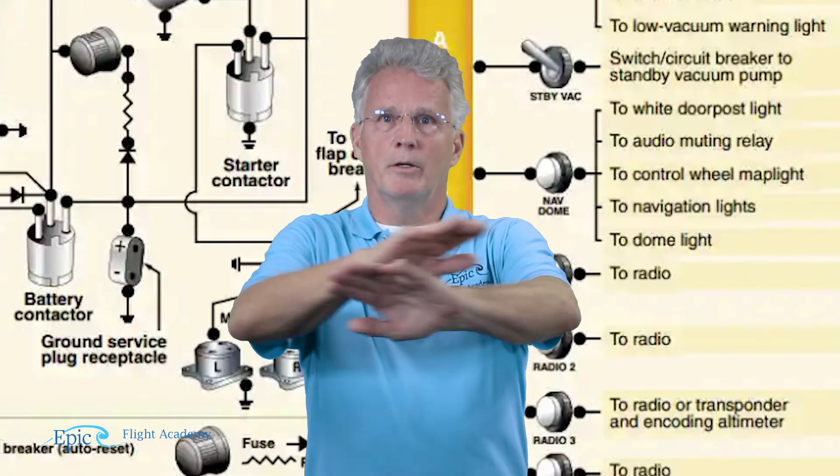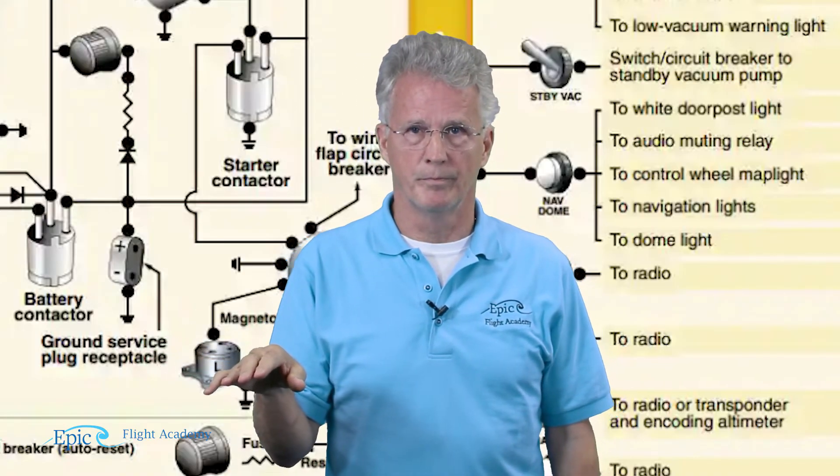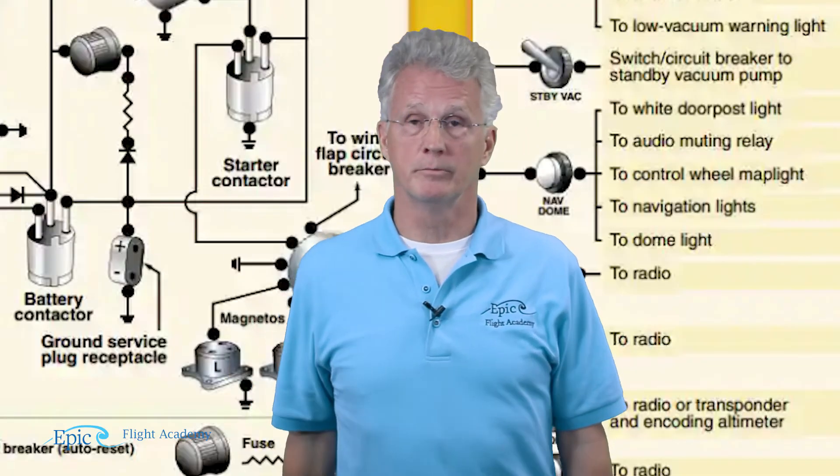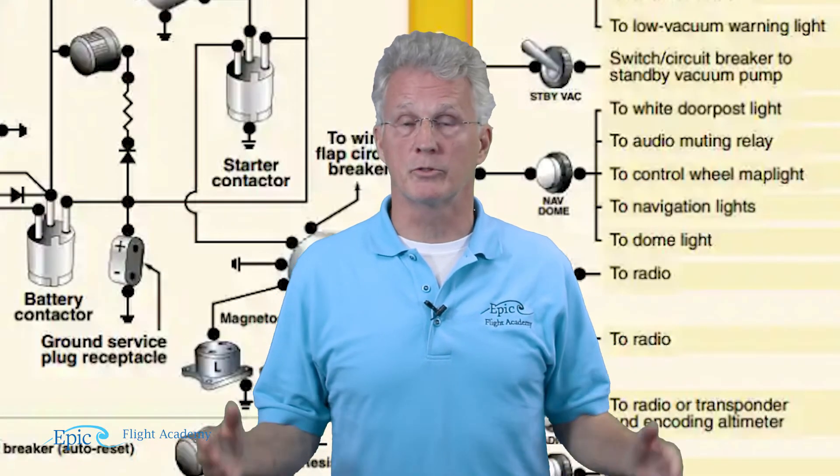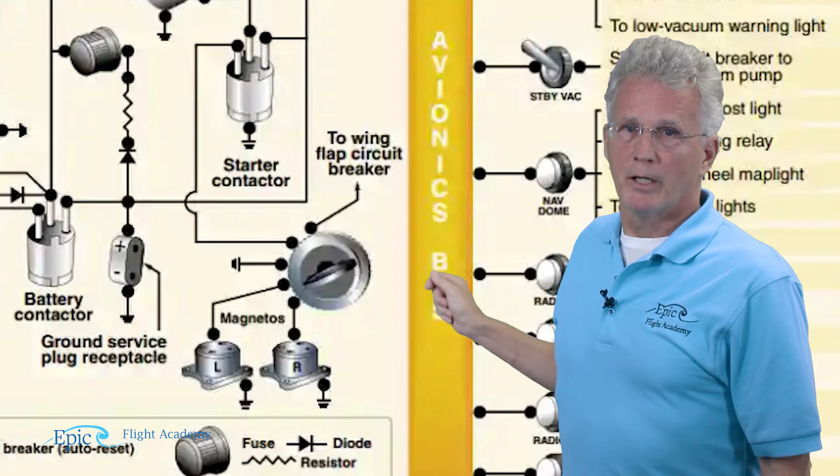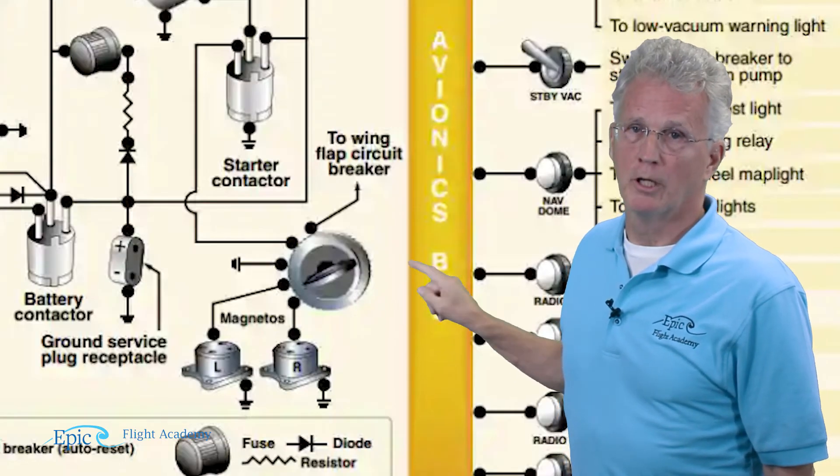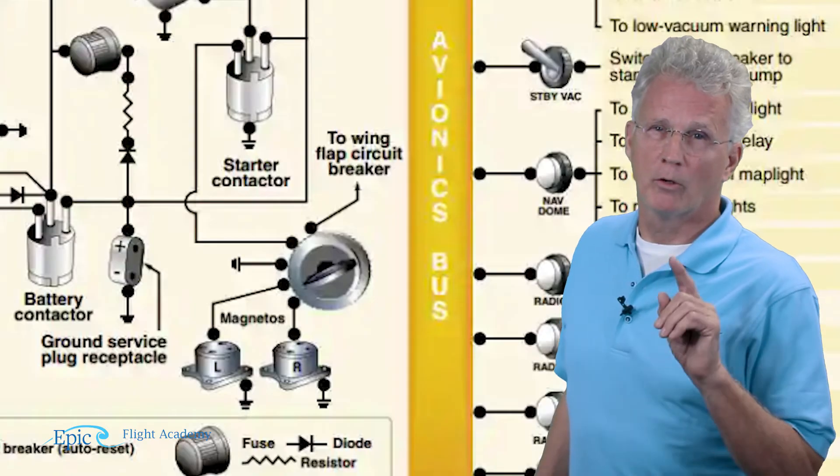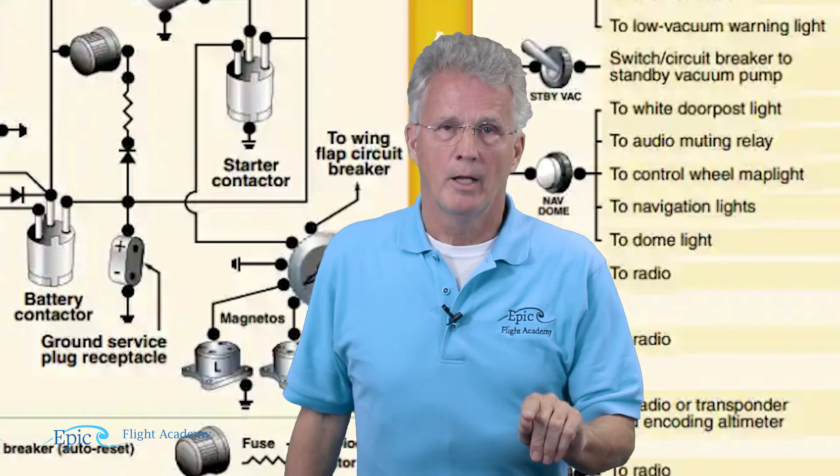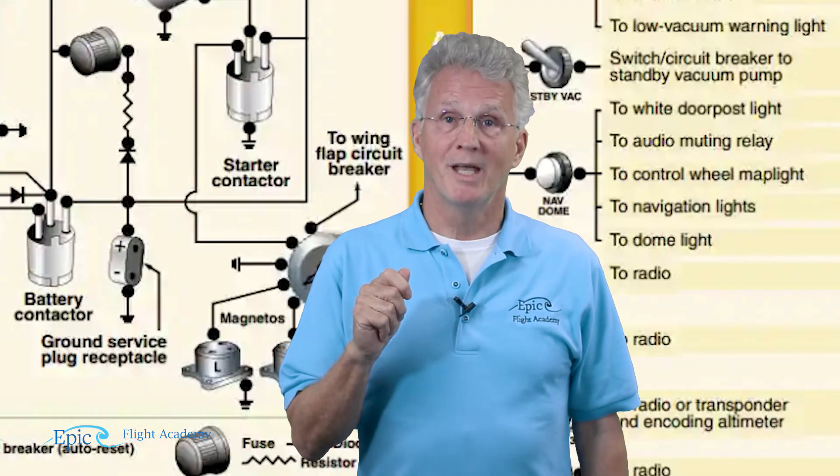The magnetos are completely independent of the electrical system. If the engine's turning, the magneto's turning. If the magneto's turning, it's providing a spark to the engine, totally independent of the electrical system. So why is it here on the schematic? It's on this schematic because this key switch is used - we want to check the ground connection on that magneto. The grounding of the magneto shuts the magneto down. And for safety reasons, we want to be sure that if we turn this key off, those magnetos are grounded and will not engage. And that's why they're there.